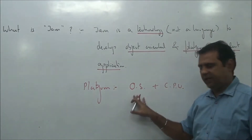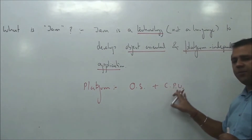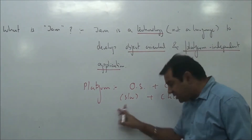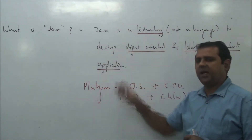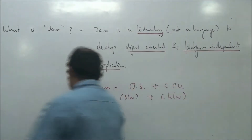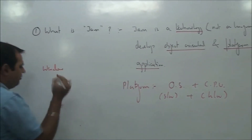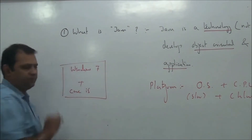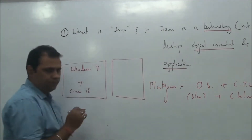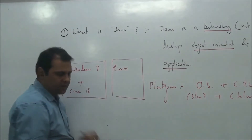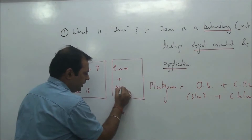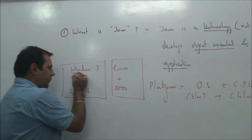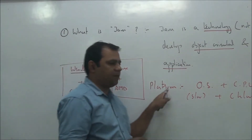One key part is played by the operating system, and another is the central processing unit or CPU. So a platform is a combination of software and hardware required for running any application. For example, a Windows 7 PC running on Core i5 is one platform. A Linux machine running on an AMD processor is another platform. If the operating system or the CPU changes, the platform has changed.